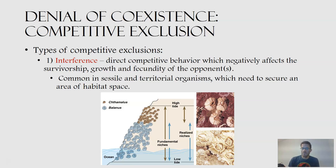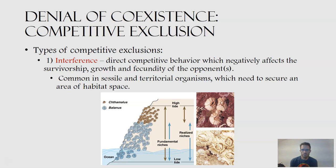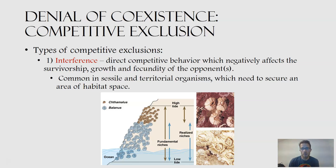There are multiple types of competitive exclusion. The first is interference, where there's direct competitive behavior that negatively affects either survivorship, growth, or fecundity of opponents. This is really common in sessile or territorial organisms — sessile meaning they can't move — and territorial organisms like birds that need to secure an area of habitat space and can be displaced by a more competitively dominant species.